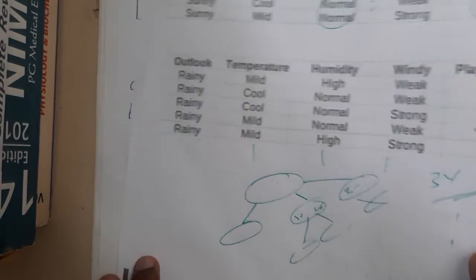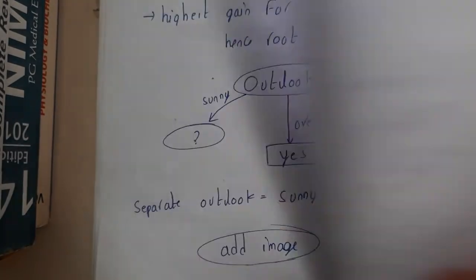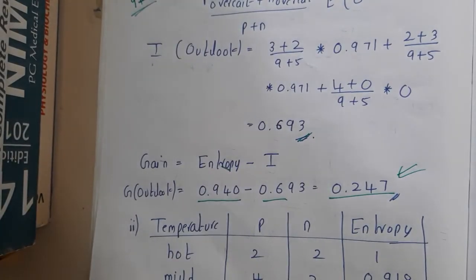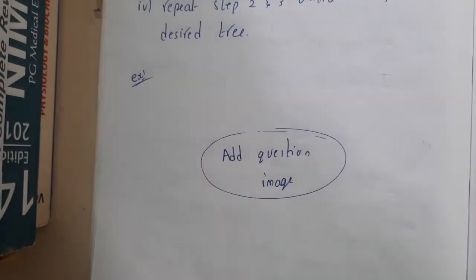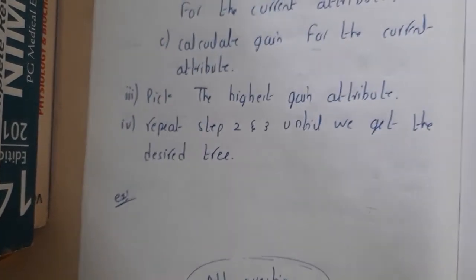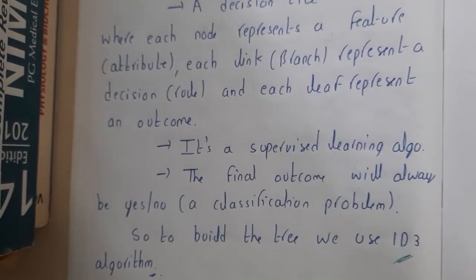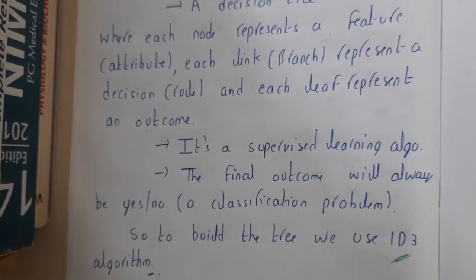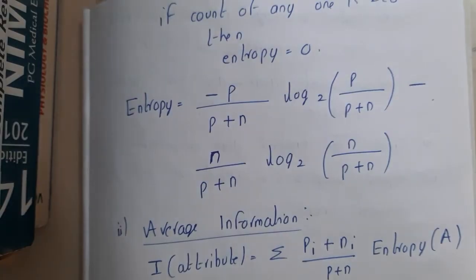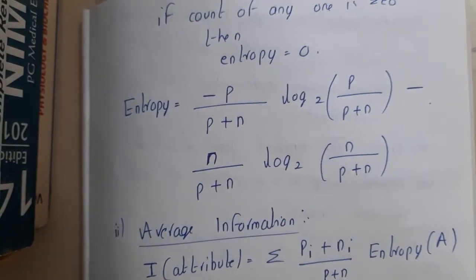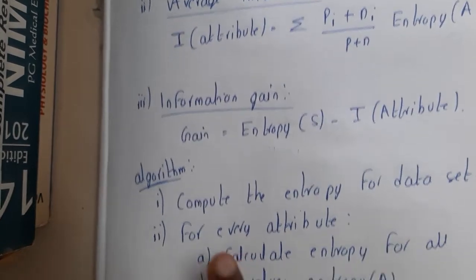I hope everyone got a basic idea about this ID3 algorithm. If you want to solve the problem, please make sure you are perfect with it — I am not forcing you not to solve it. Make sure you go through the theory part at least once, because in examinations, the question could ask for the theory. Make sure you are perfect with the formulas.